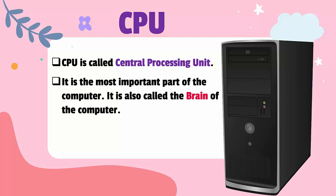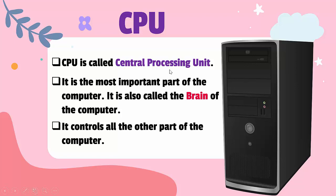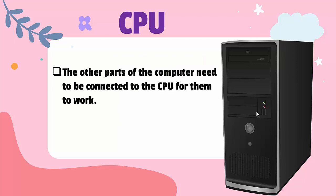The CPU controls the other parts of a computer. All the other parts of the computer are connected to the CPU, such as the monitor, the mouse, the keyboard — all the parts are connected to the computer. So the CPU controls all the other parts, and the other parts need to be connected to the CPU for them to work.